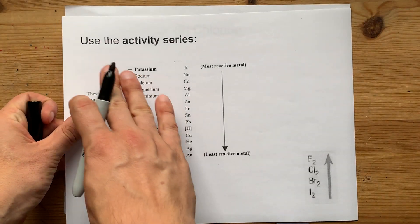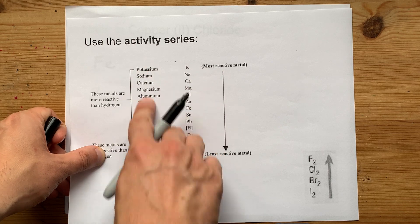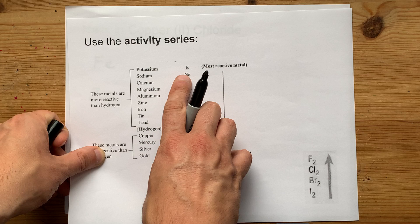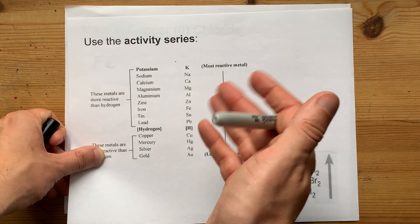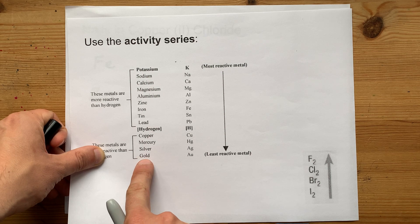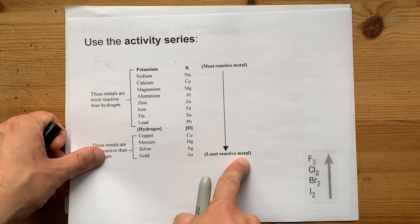The reason is the activity series. Metallic potassium, at least according to this list, is among the most reactive metals. Putting metallic potassium in almost anything will cause a reaction. Putting metallic gold inside something will almost never lead to a reaction. It's the least reactive metal.